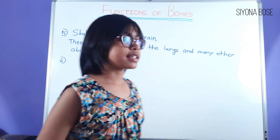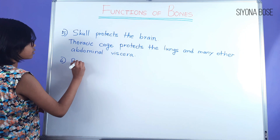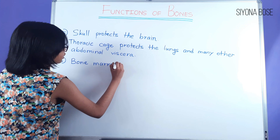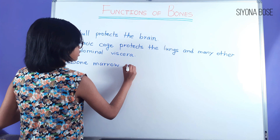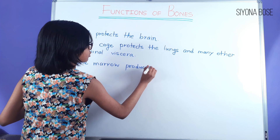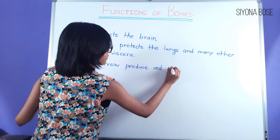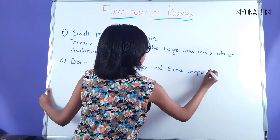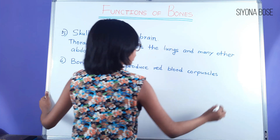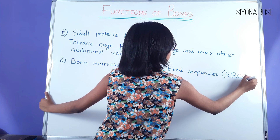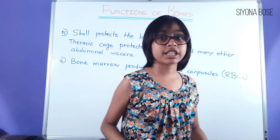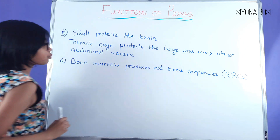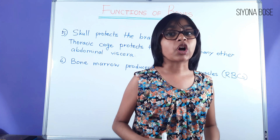Bone marrow, present in the medullary cavity of bones, produces red blood cells — RBCs. RBCs consist of hemoglobin, which gives the red color of blood.